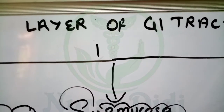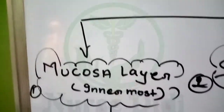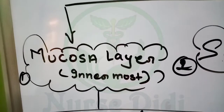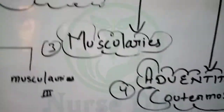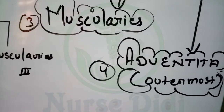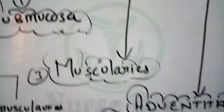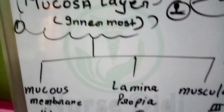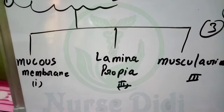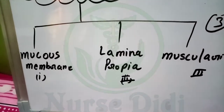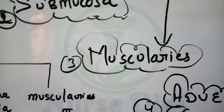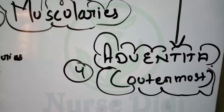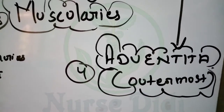We have 4 layers: the mucosa layer, sub-mucosa, muscularis, and adventitia as the outermost layer. We have studied these 3 or 4 layers. The mucosa layer has 3 sub-layers: mucous membrane, lamina propria, and muscularis mucosa. Now we are going to study sub-mucosa, muscularis, adventitia, serosa, and the outermost layer.